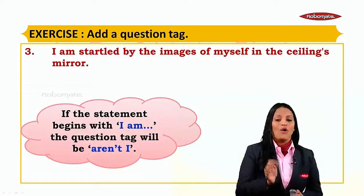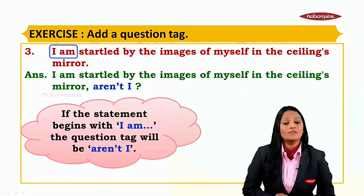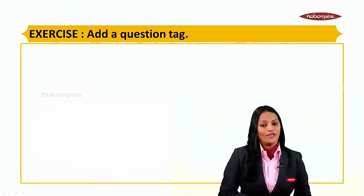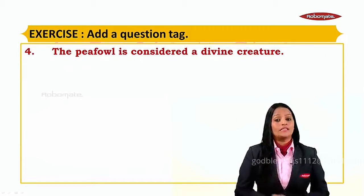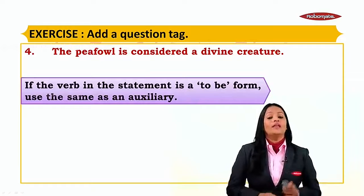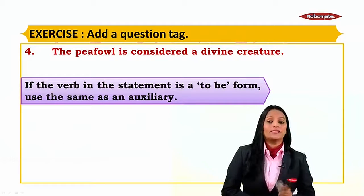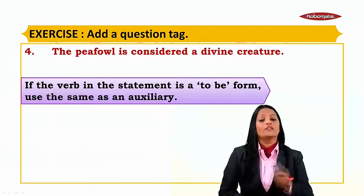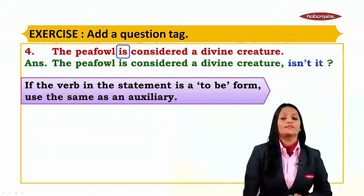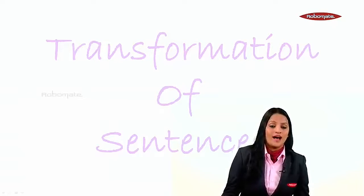Next: 'I am startled by the images of myself in the ceiling's mirror.' Remember, 'I am' always takes the tag 'aren't I' - so the tag is 'aren't I'. Next: 'The peacock is considered a divine creature.' Here 'is considered' contains 'is', which is a 'to be' form auxiliary. Remember the rule: if the verb is in 'to be' form, use the same verb for the tag, making it negative - so we say 'isn't it'. This is how simple question tags are. Thank you.